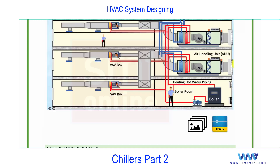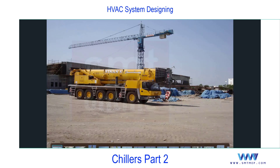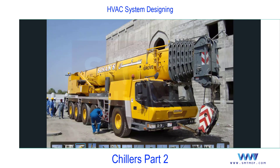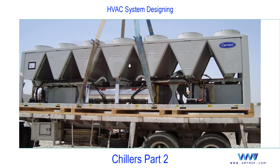This is an installation of a chiller using a crane, from an Oman project. The upper sections are all air-cooled condensers — you can see the fins and tubes inside. Below is the shell and tube evaporator, the expansion device, and on the other side you'll find the compressors.